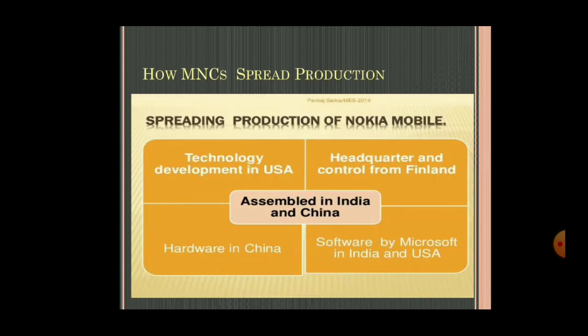How do MNCs spread production? Here is the example of Nokia mobile. Technology development is done in the USA. Headquarters and control are from Finland. Assembly is done in India and China. Hardware comes from China. Software is developed by Microsoft in India and the USA. This is the way MNCs are working.